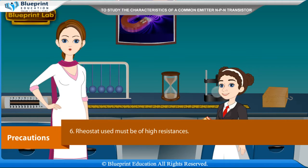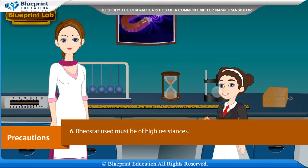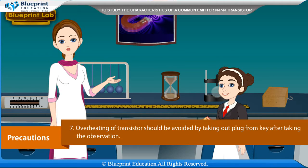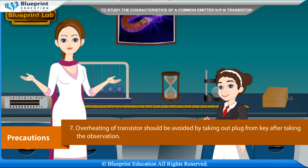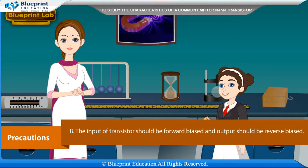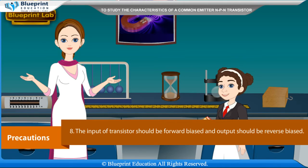Rheostat used must be of high resistance. Overheating of transistor should be avoided by taking out the plug from the key after taking the observation. The input of the transistor should be forward biased and the output should be reverse biased.